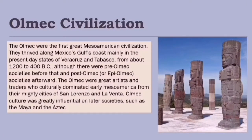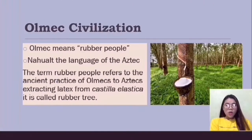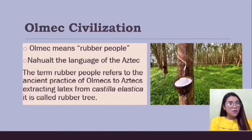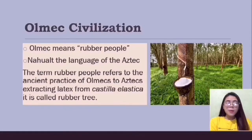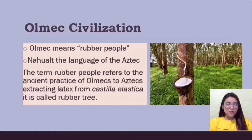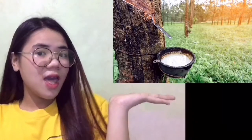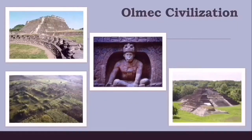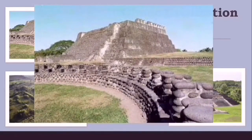Olmec culture was greatly influential on later societies such as the Maya and the Aztec. The word 'Olmec' means 'rubber people' in the Aztec language Nahuatl. The term refers to their practice of extracting latex from the Castilla elastica, the rubber tree. The picture shown here is the permanent city temple complex at San Lorenzo Tenochtitlan, La Venta, Tres Zapotes, and Laguna de los Cerros.